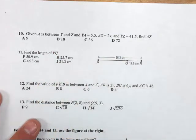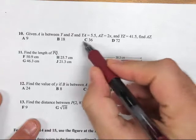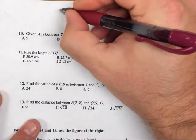Alright, number 10. Given A is between Y and Z and we've got all these measurements. Let's go ahead and draw our picture in.